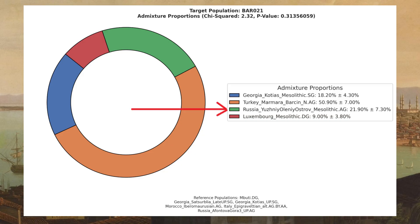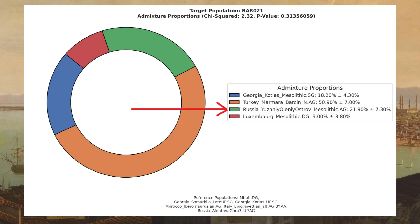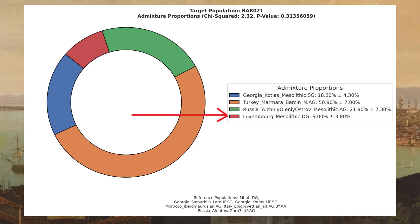He scores 22% Eastern hunter-gatherer, which is very high for Southern Europe and suggests heavy Slavic ancestry. He also carries 9% Western hunter-gatherer ancestry, which is also extremely high for a Greek.